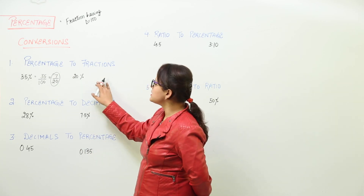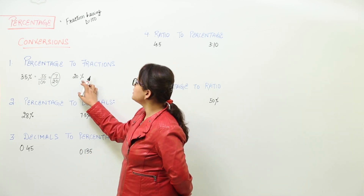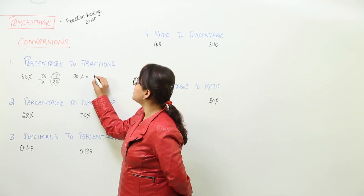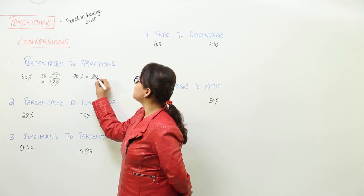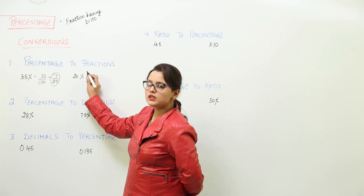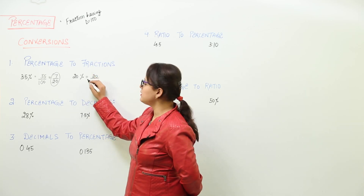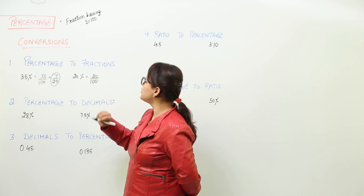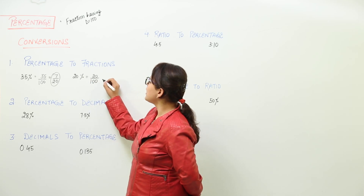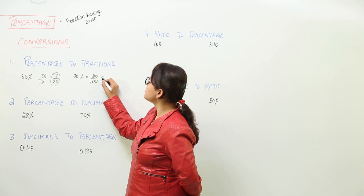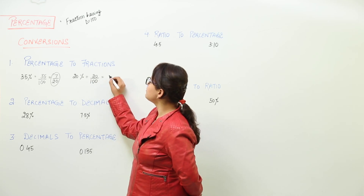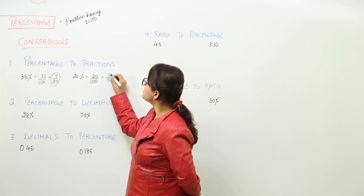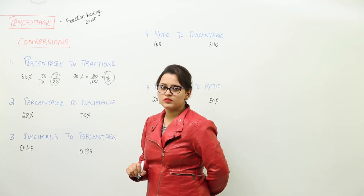The second one is converting 20% into a fraction. Again we write 20 over 100, and we can check if it simplifies further. Yes, we get it as 1 by 5.